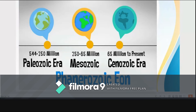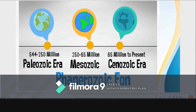The Phanerozoic eon represents the time during which the majority of macroscopic organisms — algal, fungal, plant, and animal — lived. When first proposed as a division of geologic time, the beginning of the Phanerozoic was thought to coincide with the beginning of life. In reality, this eon coincides with the appearance of animals that evolved external skeletons like shells, and the somewhat later animals that formed internal skeletons such as the bony elements of vertebrates. The time before is usually referred to as the Pre-Cambrian, and the Pre-Cambrian is usually divided into three eras.